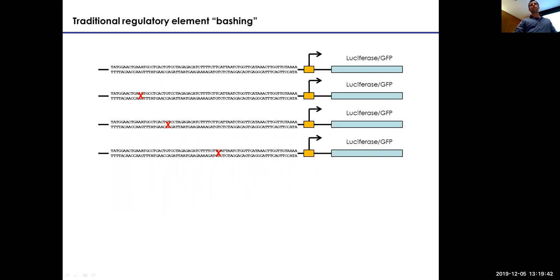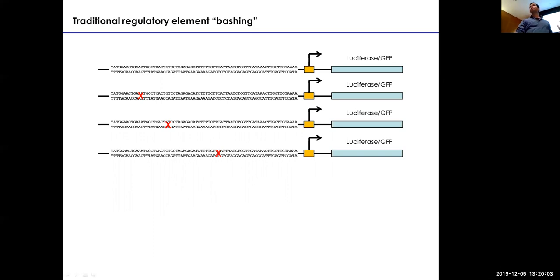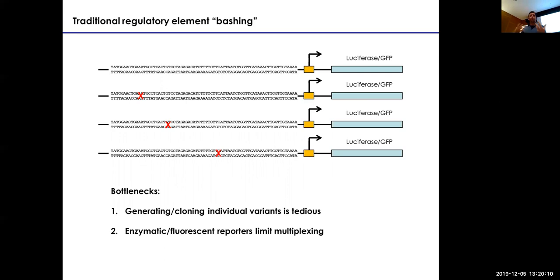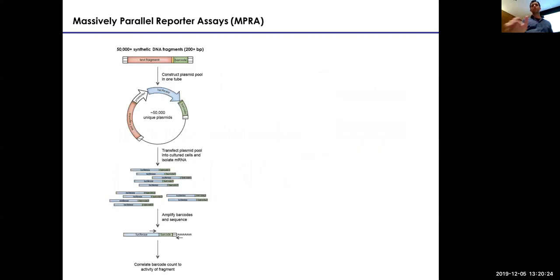The traditional approach has been to take an element and test whether it's truly a gene regulatory element. You take it outside the endogenous chromosome and ask if it can drive the expression of a reporter gene by itself. Traditional reporter genes have been luciferase or green fluorescent protein, which let you ask how much protein is made when you change a nucleotide or try different elements. But generating and cloning individual genetic variants is extremely tedious, and enzymatic/fluorescent reporters limit multiplexing.